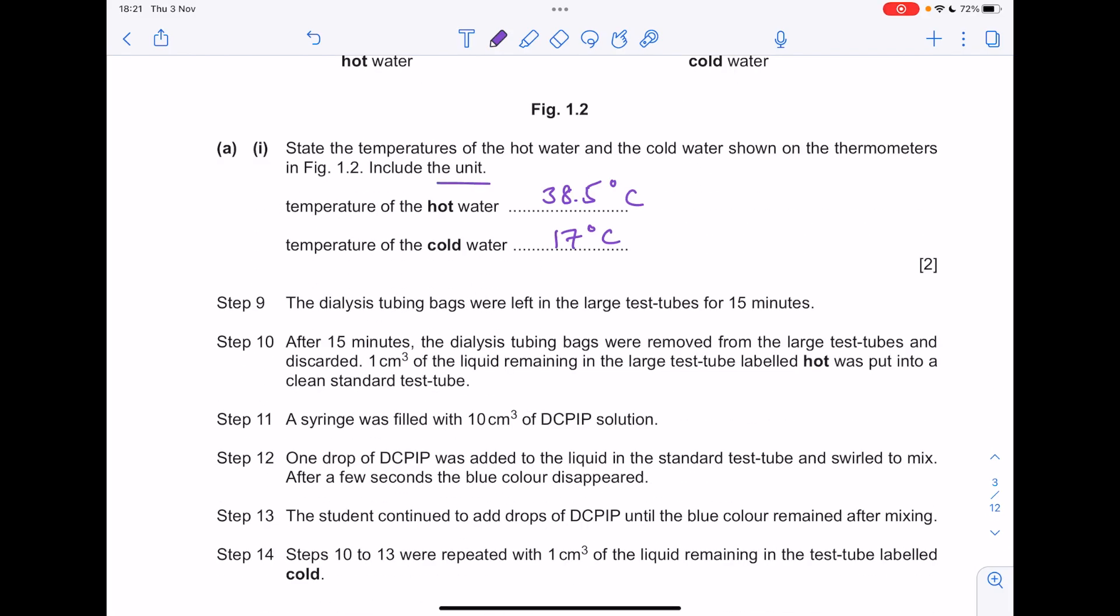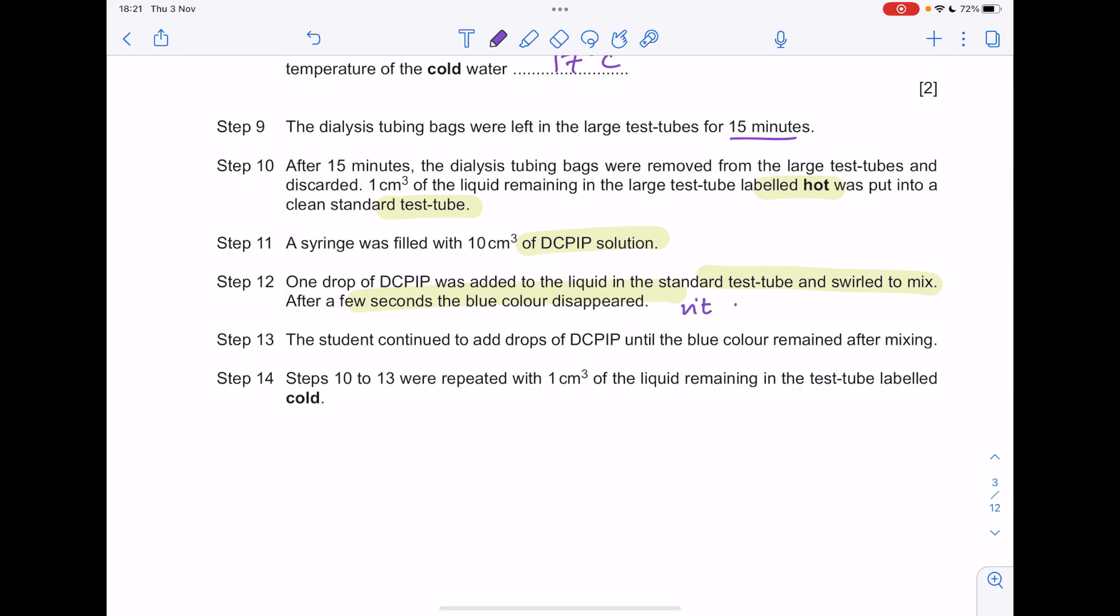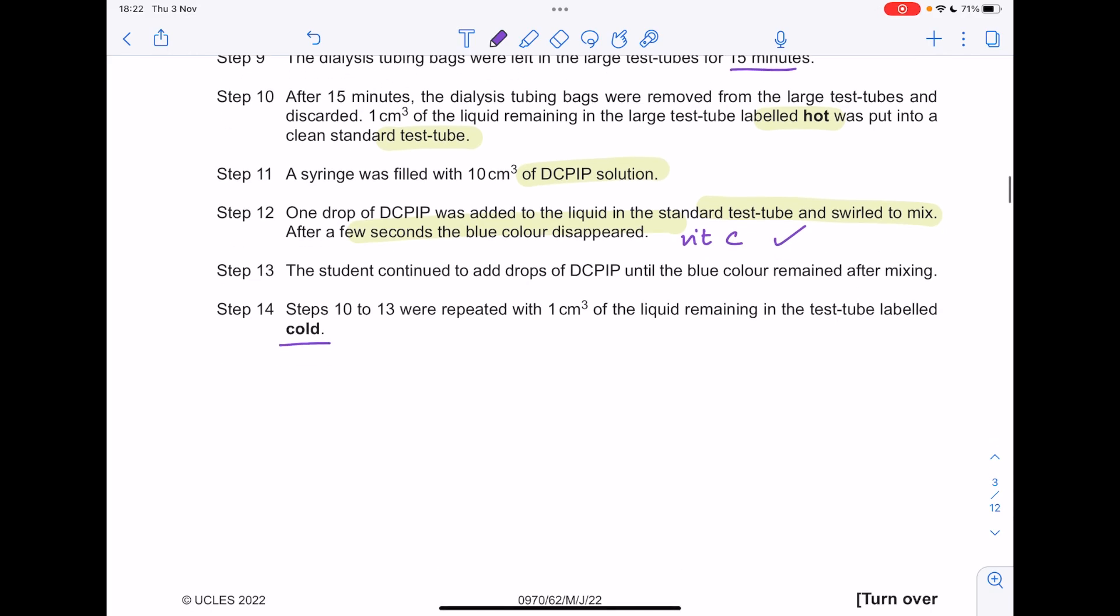And we've included the all-important unit. The dialysis tubing bags were left in the large test tubes for 15 minutes. After 15 minutes, the dialysis tubing bags were removed from the large test tubes and discarded. One centimeter cubed of the liquid remaining in the large test tube labeled hot was put into a clean standard test tube. A syringe was filled with DCPIP solution. One drop of DCPIP was added to the liquid in the standard test tube and swirled to mix. After a few seconds, the blue color disappeared. The student continued to add drops of DCPIP until the blue color remained after mixing. Steps 10 to 13 were repeated using the test tube labeled cold.